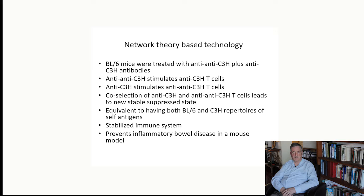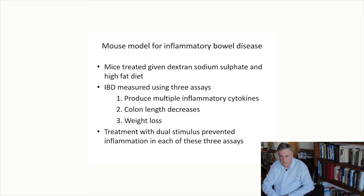This is a stabilized immune system because of the greater diversity of self-antigens for which they are tolerant. We found that this stabilized immune system was resistant to the induction of inflammatory bowel disease, including colitis and Crohn's disease. In the mouse model for IBD, mice are treated with dextran sodium sulfate and a high fat diet, and IBD is measured using three assays: production of inflammatory cytokines, change in colon length, and weight loss. Treatment with the dual stimulus prevented inflammation in each of these three assays.